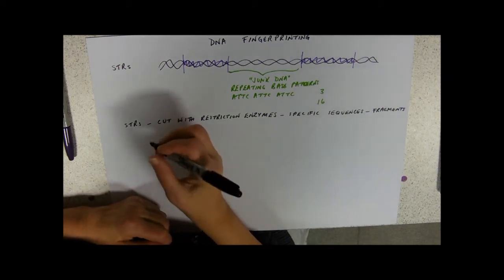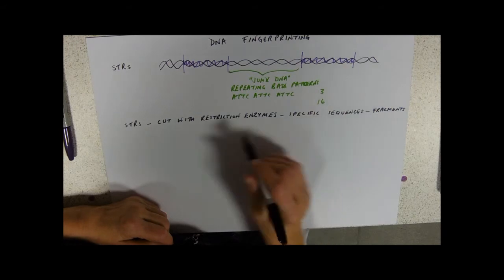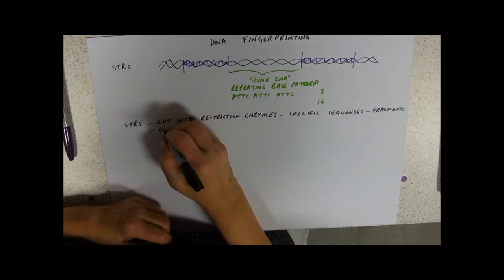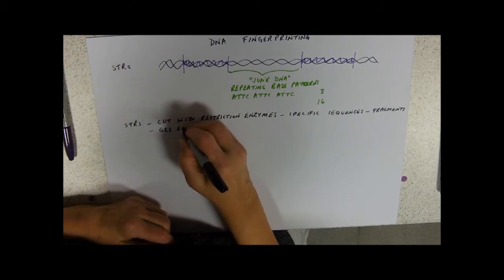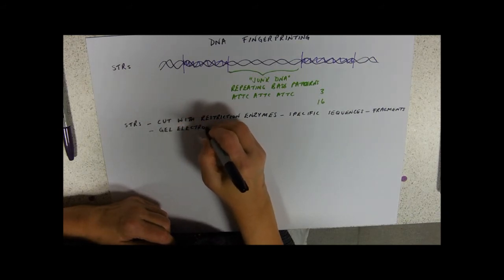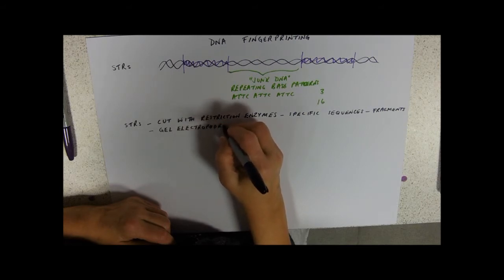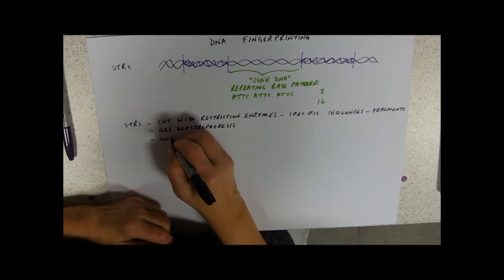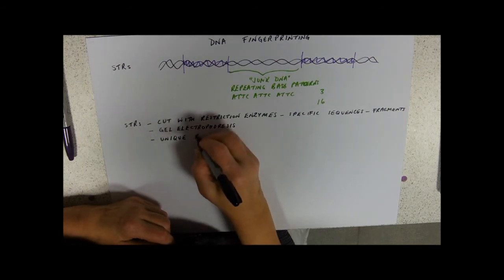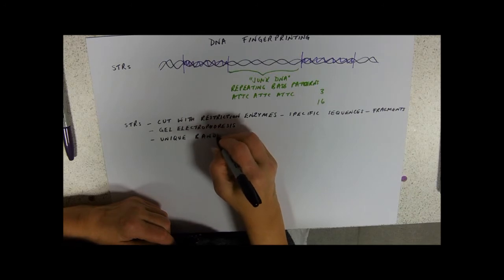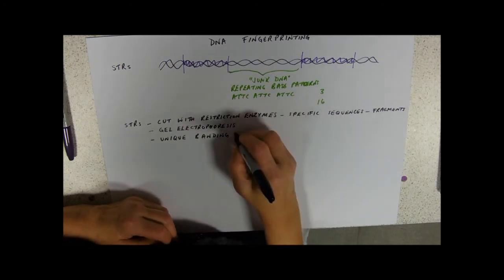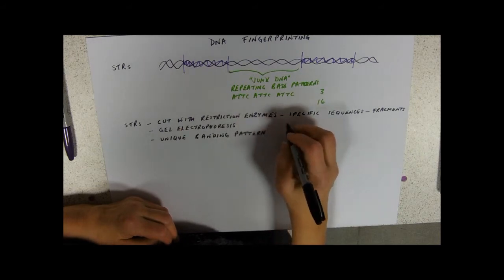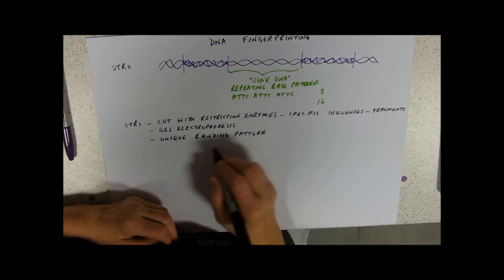So you've cut them with restriction enzymes and then of course our separation technique is gel electrophoresis. And what you get is a unique banding pattern for an individual, not for identical twins probably, with their DNA being identical.